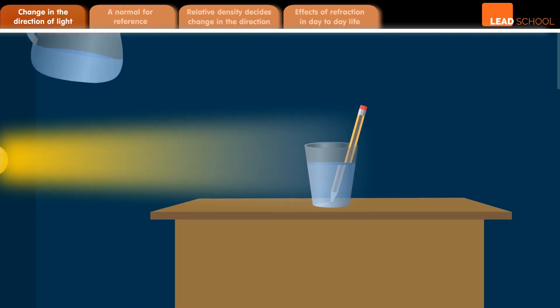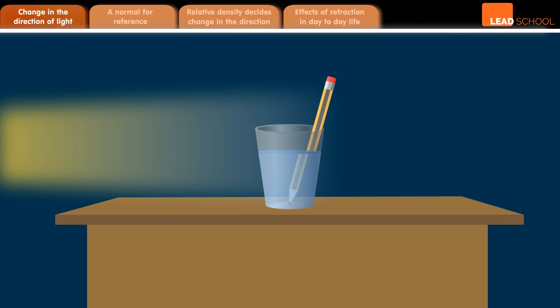Do you see a change in how the pencil looks? The lower half of the pencil that is in water looks like it has shifted slightly when you compare it with the rest of the pencil that is in the air. Do not let your eyes fool you. This is just refraction at play.